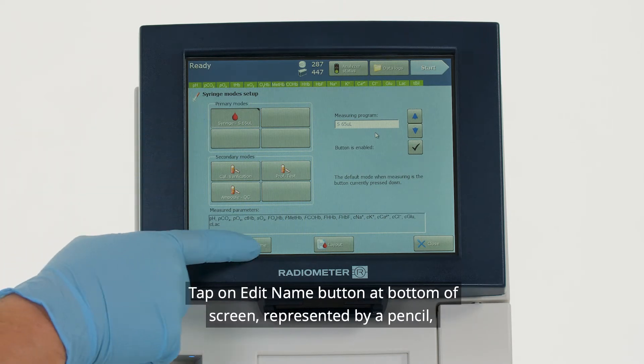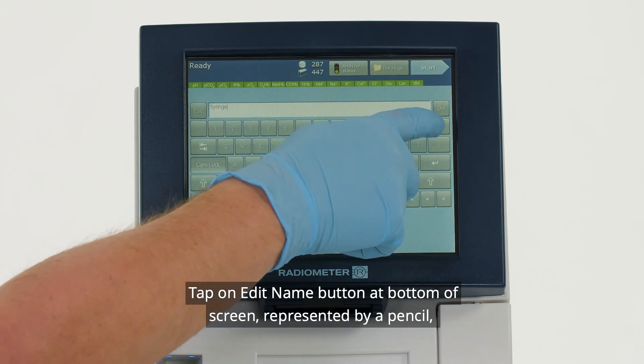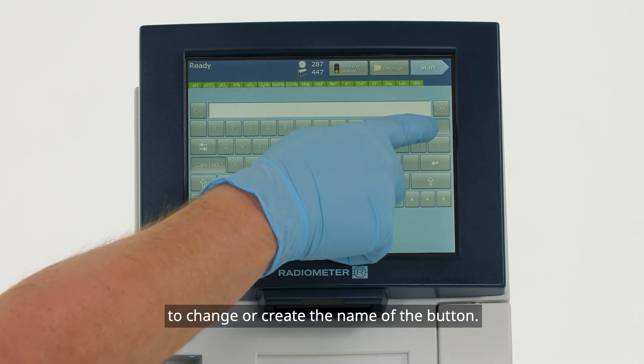Tap on the Edit Name button at the bottom of the screen, represented by a pencil, to change or create the name of a button.